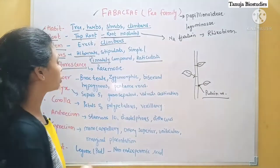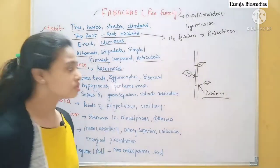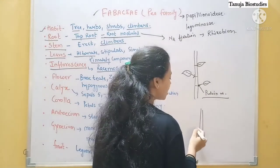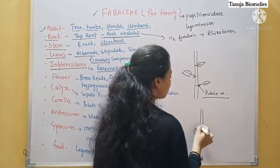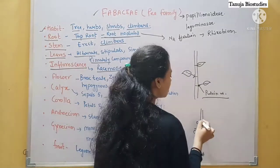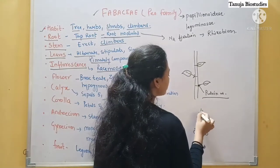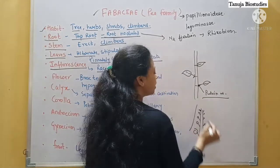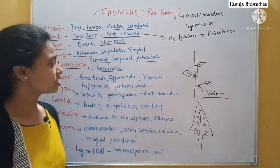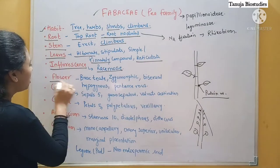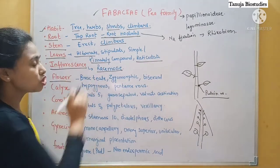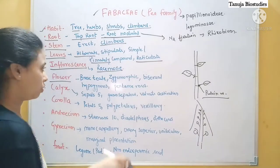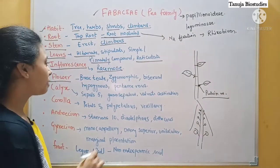Now come to the inflorescence — the flower arrangement. It is racemose. Here the peduncle is present, and the flowers from the lower part will be older, going toward the center — that is called racemose inflorescence. In the racemose inflorescence, you can get a spike, a raceme, or a panicle.